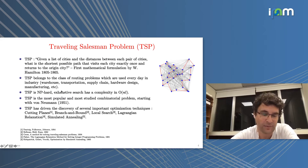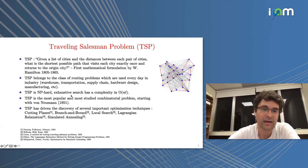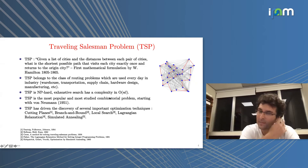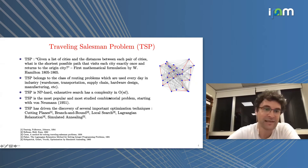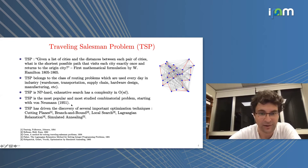TSP is a hard problem. Exhaustive search has a complexity of n factorial. It is the most popular and most studied combinatorial problem, starting with von Neumann in 1951.